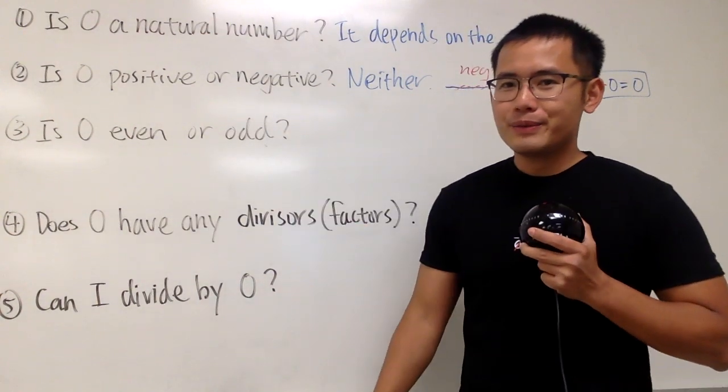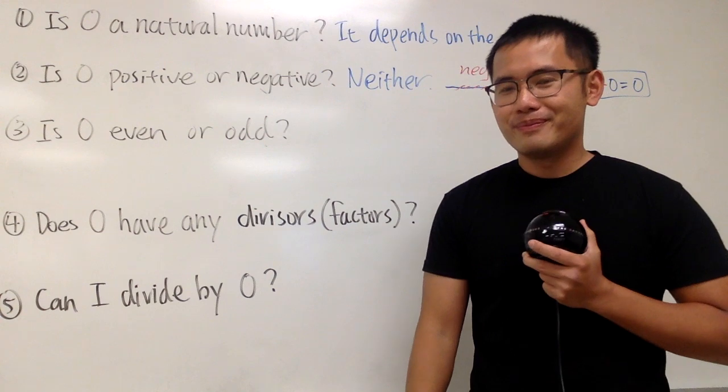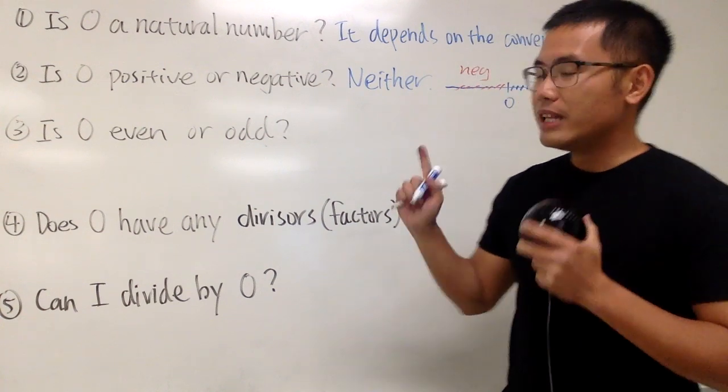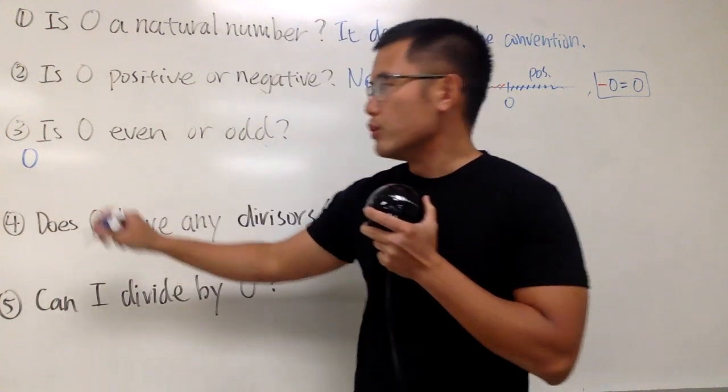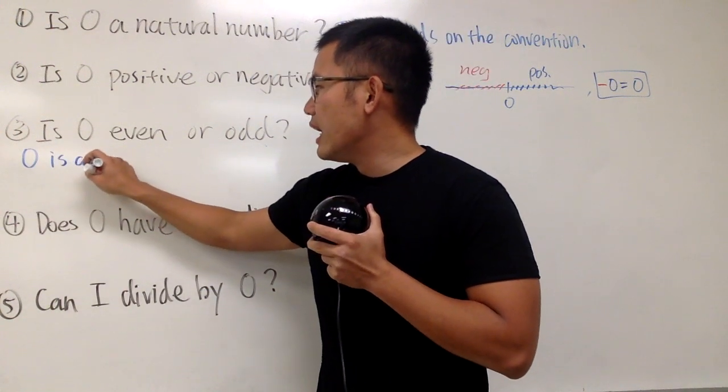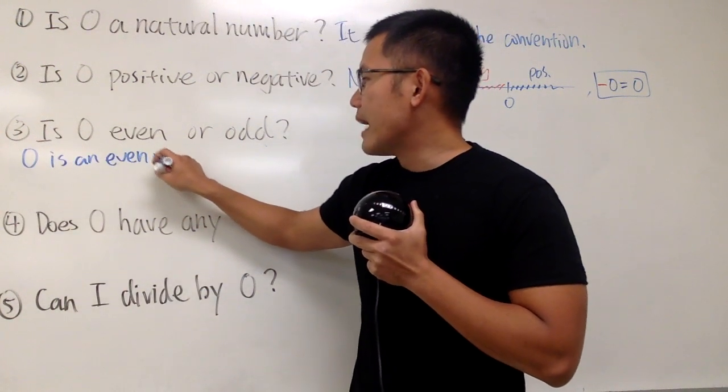Is zero even or odd? It's both. I'm going to explain. First of all, let me write this down right here for you guys. If I put on zero, I can tell you, zero is an even number.